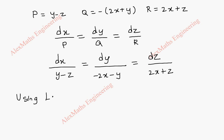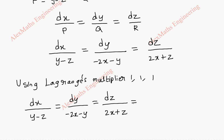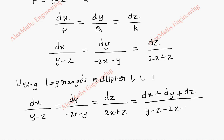Using Lagrange's multiplier 1, 1, 1, we get dx/(y−z) = dy/(−2x−y) = dz/(2x+z). Using the ratio property, we add all the numerators: dx+dy+dz divided by (y−z−2x−y+2x+z). Here y−y, −z+z, and 2x−2x all cancel, giving 0 in the denominator.